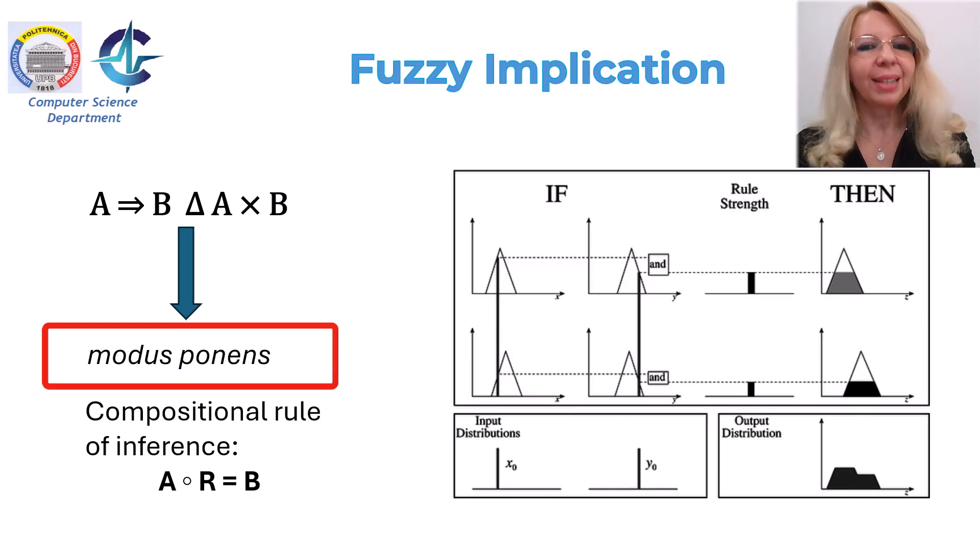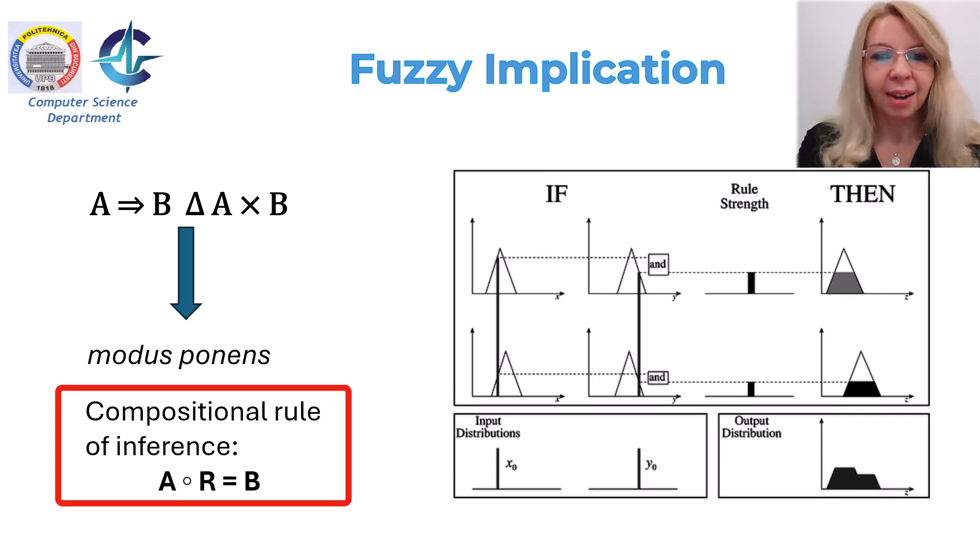We are ready to give the definition of compositional rule of inference. Let R be a relation from universe U1 to universe U2, and A is a fuzzy set defined on U1. Then A composed by R is B, and this is a set in U2. So B is a set in U2 induced by A.